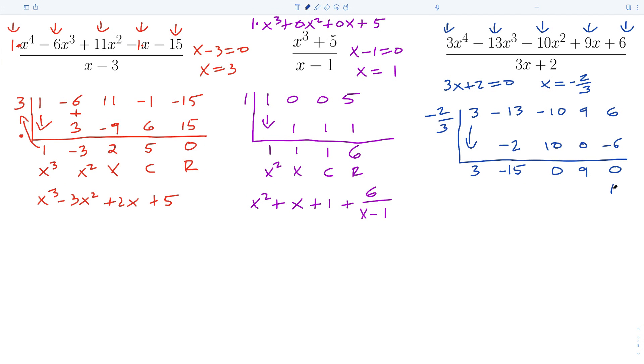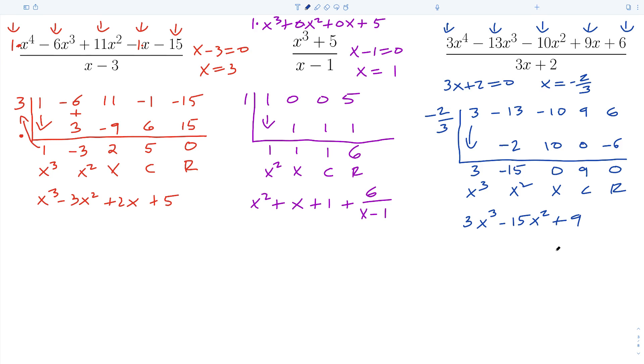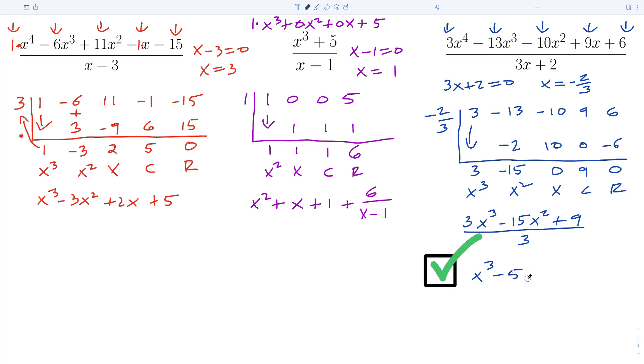In the third example: zero is the remainder, nine is the constant, zero is the coefficient of the x term, negative fifteen is the coefficient of the quadratic term, and three is the coefficient of the cubic term — giving three x cubed minus fifteen x squared plus nine. However, there's a big thing to pay attention to here. Remember, if three x plus two divided into three x to the fourth, the leading coefficient would be one in long division. Our answer has a coefficient of three, so we need to divide our quotient by three — synthetic division does not account for this. Taking the quotient and dividing by three gives a final answer of x cubed minus five x squared plus nine.